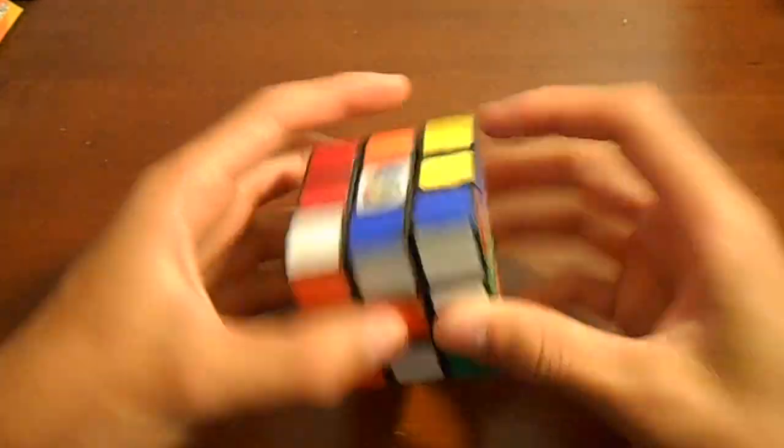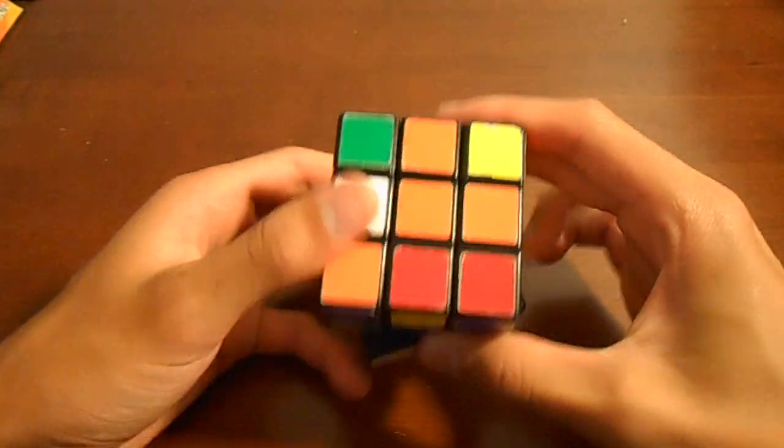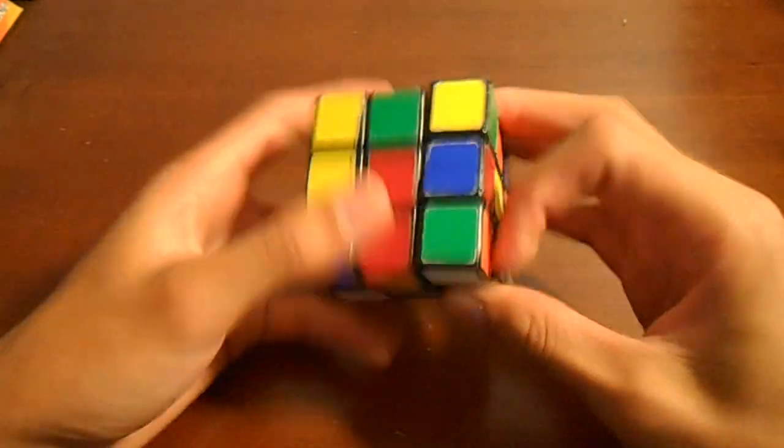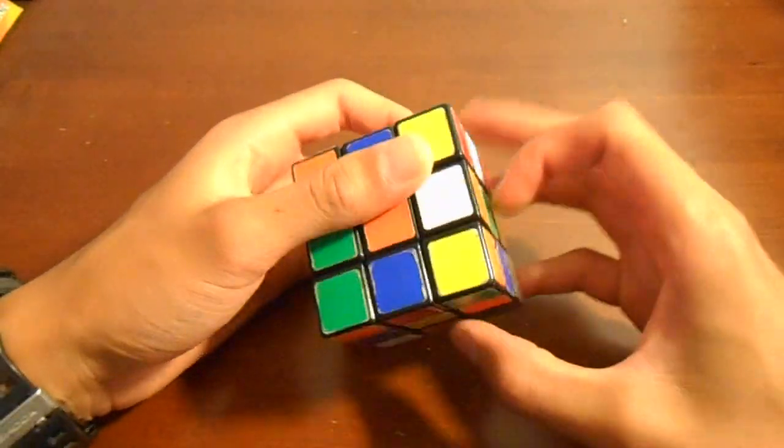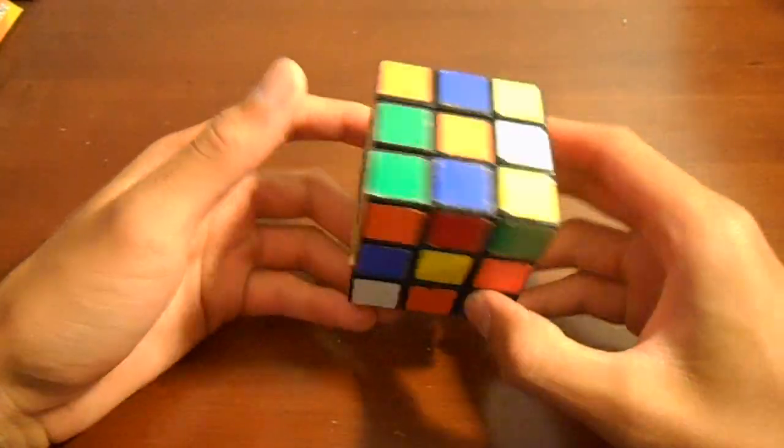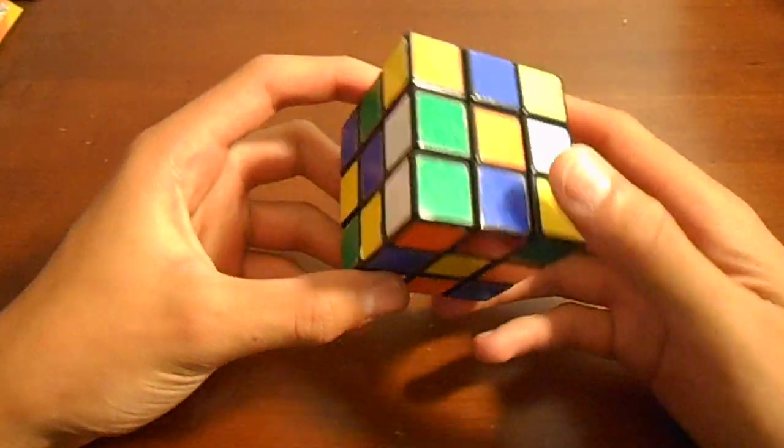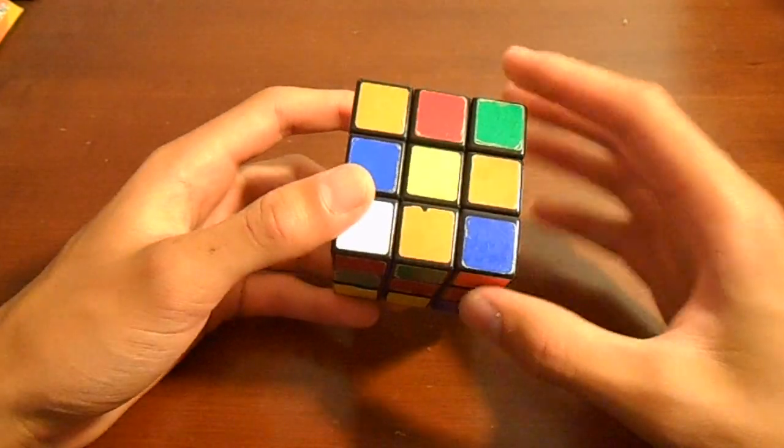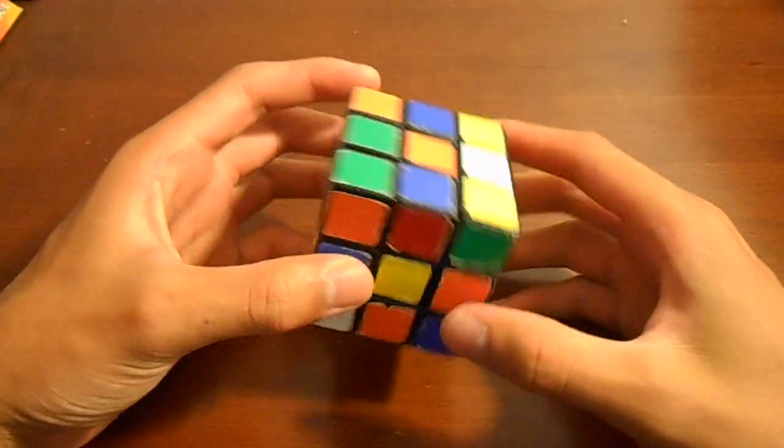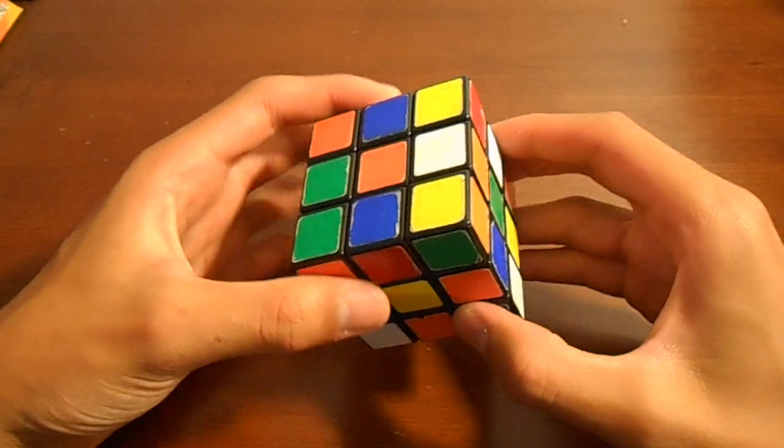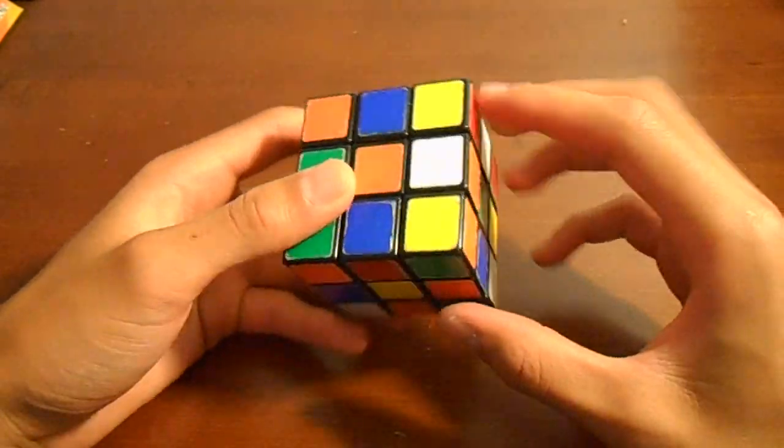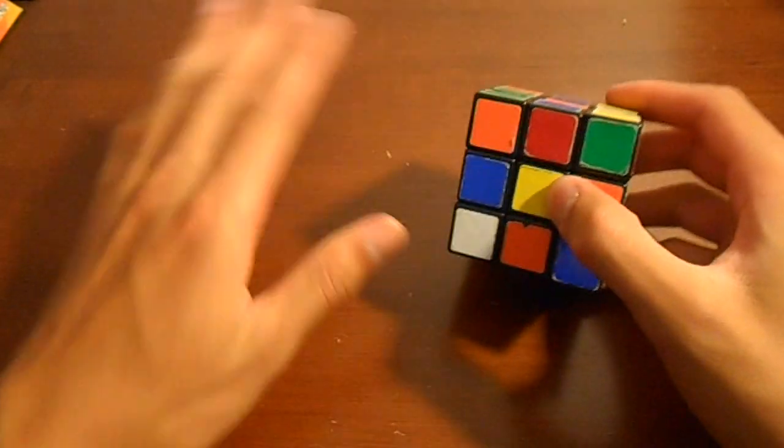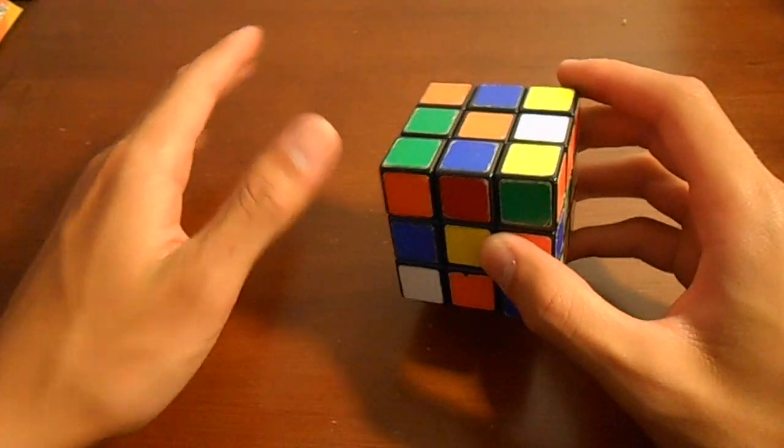Now if you struggled with that, go ahead and try it first before watching the next part. If you struggle with that there's an even simpler way to solve the cross. What we're actually going to do is we're going to replace that white center piece with the yellow center piece. So now all you have to do is just match up, is just put white here, here, here, and here. Don't worry about any of the other pieces. We'll deal with those later.